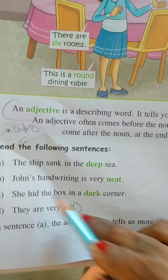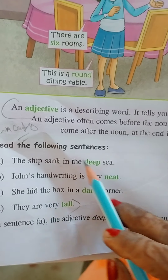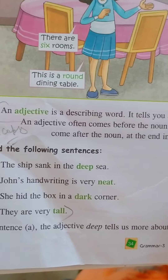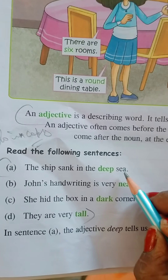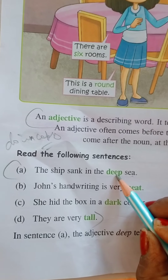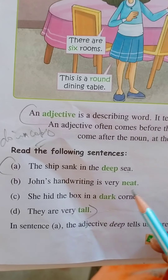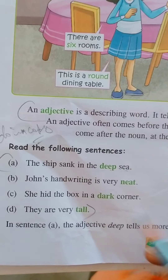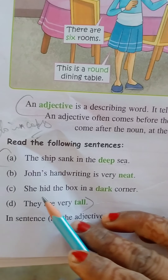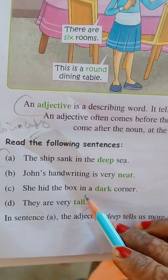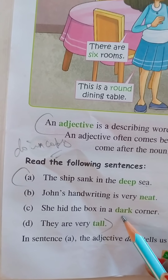Read the following sentences carefully. The ship sank in the deep sea — here 'deep' is the noun from the first. Jones' handwriting is very neat — here the noun comes from the end. She hides the box in a dark corner — here 'dark' is the adjective word.